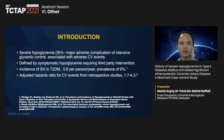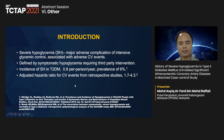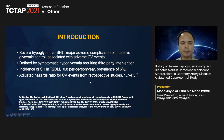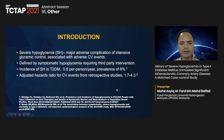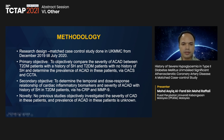Severe hypoglycemia is a major adverse complication of intensive glycemic control associated with adverse cardiovascular events. It is defined as symptomatic hypoglycemia requiring third-party intervention. The incidence of severe hypoglycemia in type 2 diabetes is about 0.8 per person per year, with a prevalence of 6 percent among diabetics. The adjusted hazard ratio for cardiovascular events from numerous studies is approximately 2 to 4. This is a matched case-control study conducted from December 2019 to July 2020.